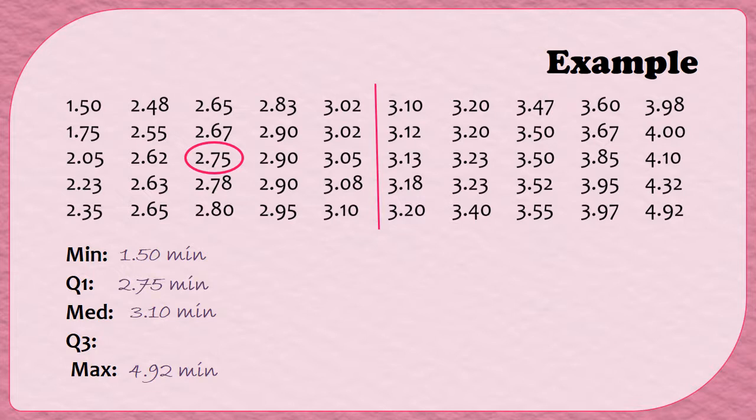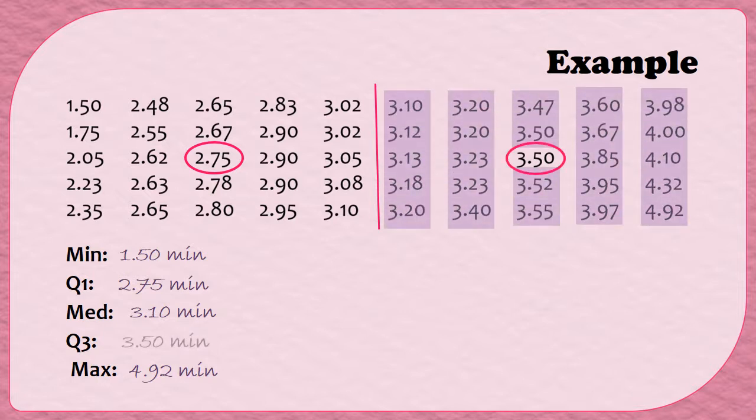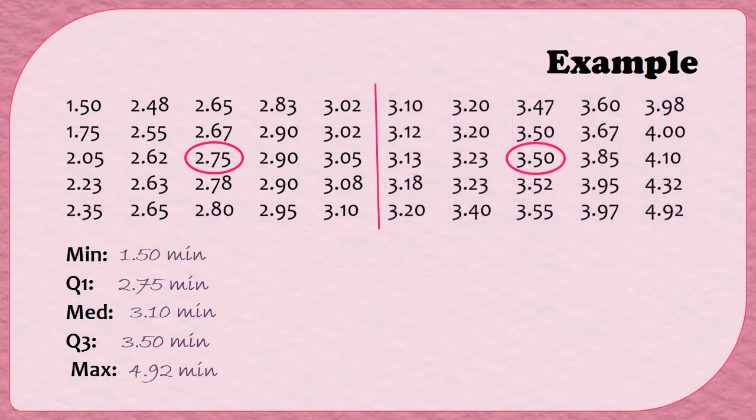Then we repeat the process to the right of the pink bar to find Q3. So finding the median of the upper half of data, I get that Q3 is going to be 3.50 minutes. So there we go, that is our five-number summary. How did you do?